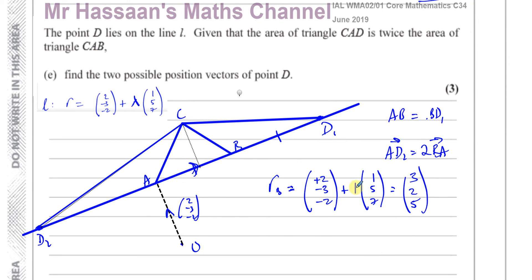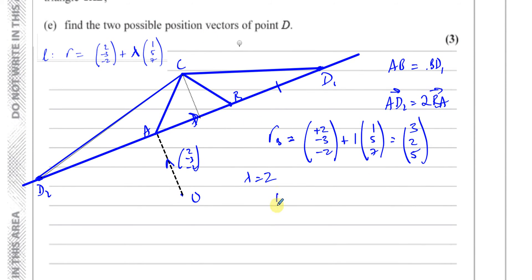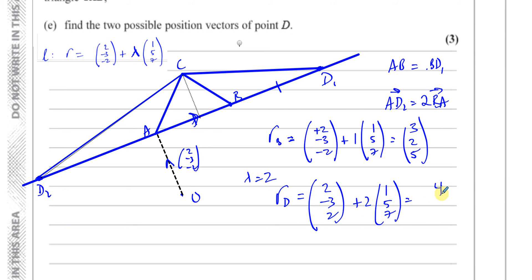So I'm sure now that when lambda is equal to 1, it takes me from A to B. Therefore, if I use lambda equals 2, it will take me from A to D and give me the position vector of D1, because I'll go from O to A and then twice the direction vector (1, 5, 7) will take me to D. So the position vector of D1 is given by (2, -3, -2) plus 2 times (1, 5, 7). That gives 2+2=4, -3+10=7, and -2+14=12. So D1 has position vector (4, 7, 12). That's one of the answers.